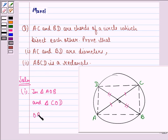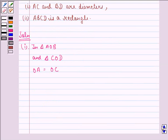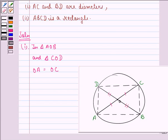OA is equal to OC, because AC and BD bisect each other. Secondly, OB is equal to OD. And we see that the angle enclosed between these two sides, that means angle AOB is equal to angle COD.